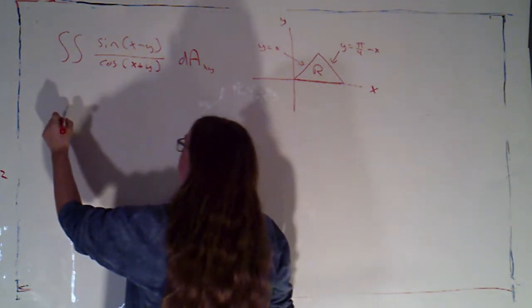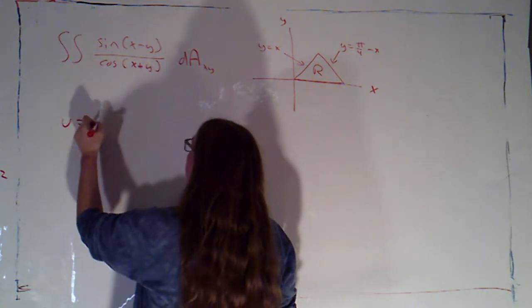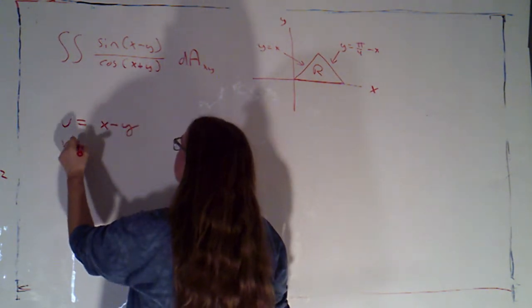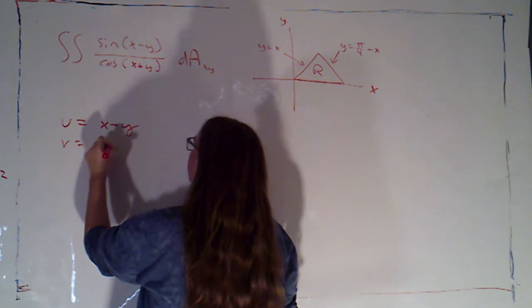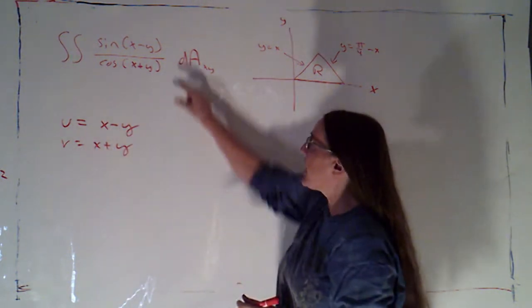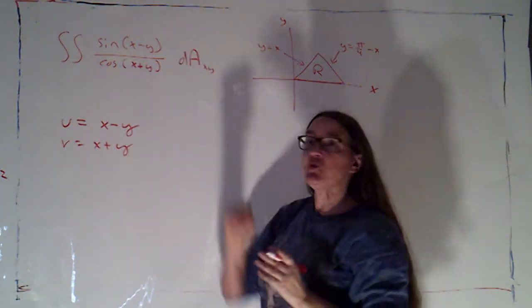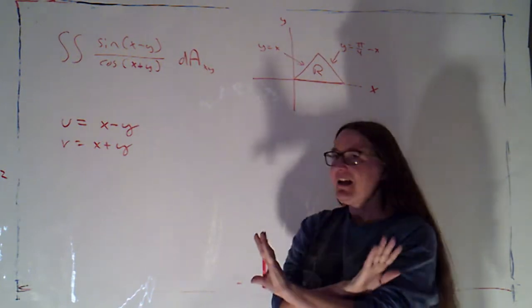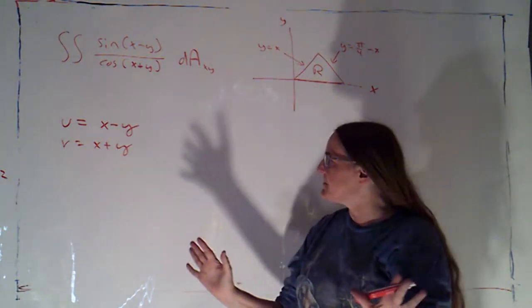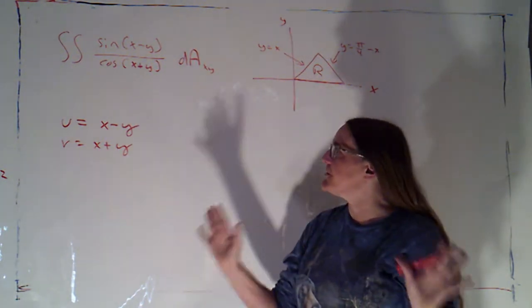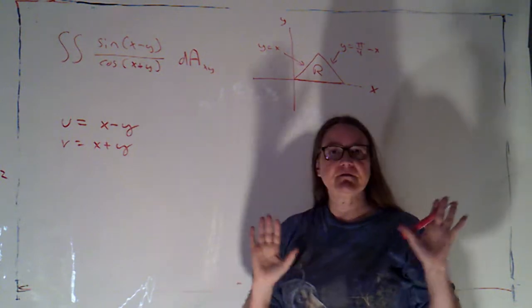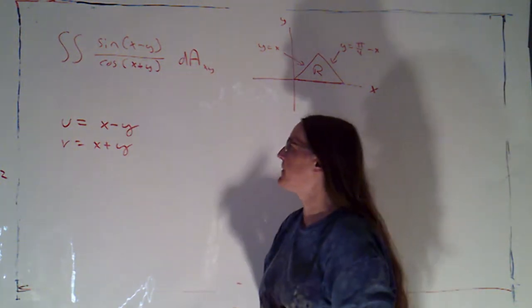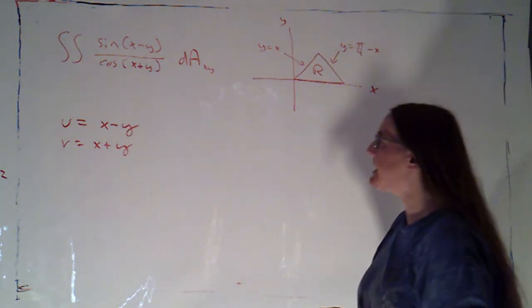The integrand suggests that I want u equals x minus y, and v equals x plus y. That way the two pieces — the sine piece and the cosine piece — are separate from each other. One of them is going to be a function of u, the cosine one is going to be a function of v; they're not influencing each other.